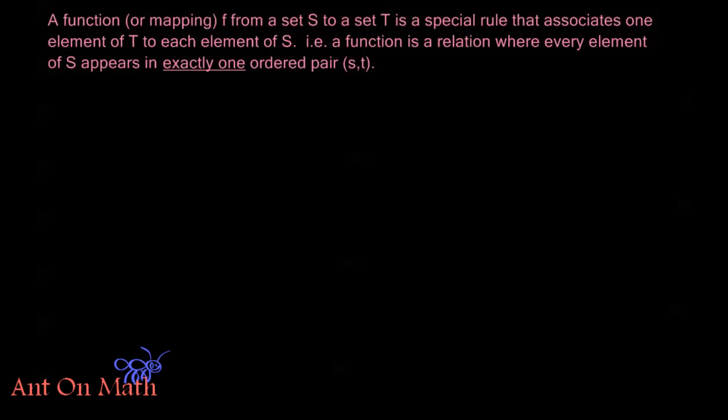So first, a function, or sometimes we say mapping, f from a set S to a set T is a special rule that associates one element of T to each element of S. In other words, a function is a relation where every element of S appears in exactly one ordered pair (s,t).